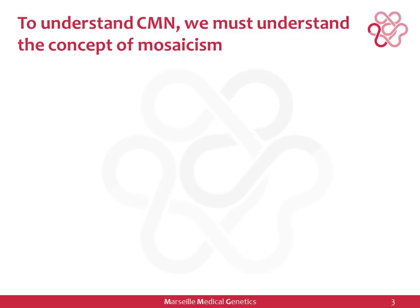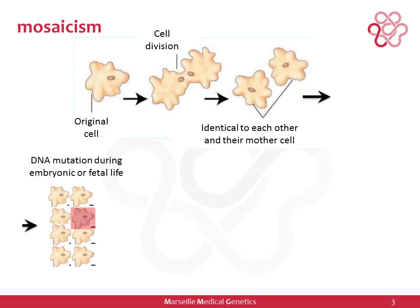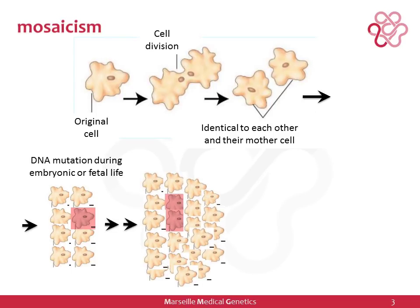To understand congenital melanocytic nevi, we must understand the concept of mosaicism. As cells divide, they make tissues grow in numbers. These cells can divide for a limited number of times and are identical to each other and to the original cell. During development and throughout life, one cell can become different because it has acquired a DNA mutation during cell division, and that mutation is faithfully reproduced in all descendant cells.